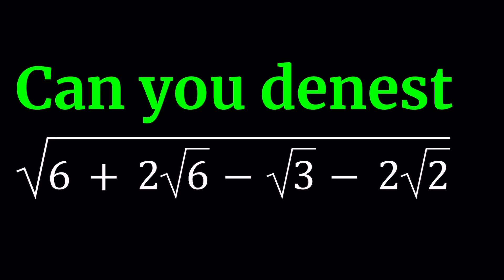Some of these nested radicals can be written in a form that is not nested, and that's called denesting. For example, if you had the square root of 5 plus 2 root 6, you could write it as root 3 plus root 2. To check your work, you could square both sides and you'll get an identity.